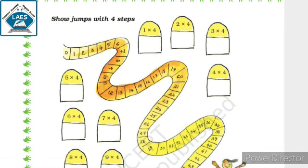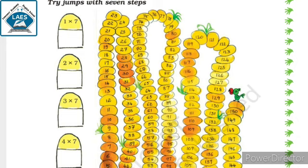Okay students. Try jumps with 7 steps. We did 3 steps and 4 steps. Now 7 steps. So first one is 0 plus 7 is equal to 7. 7 plus 7 is equal to 14. 14 plus 7 is equal to 21.